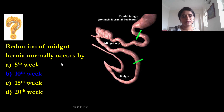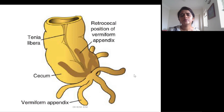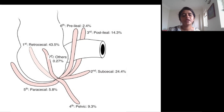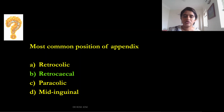The reduction of the midgut hernia normally occurs at around the 10th week. The tip of the appendix varies in position — it can be retrocecal (behind the cecum), paracecal, pelvic, subcecal, pre-ileal, or post-ileal. The retrocecal position is the most common, with the remaining positions accounting for about 0.27%. So the most common position of the appendix is retrocecal.